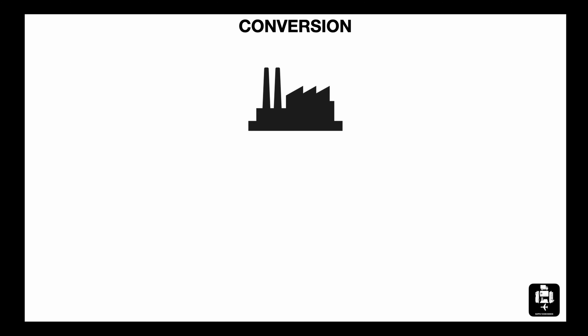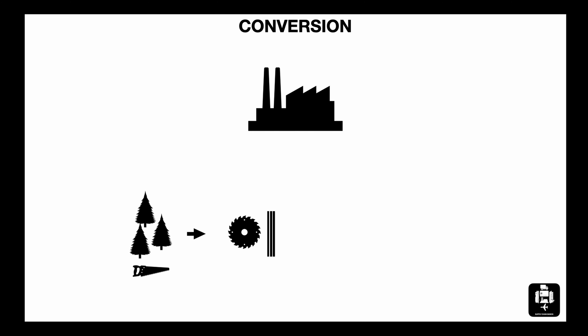Conversion. Conversion is the process of converting inputs. For example, when making chairs, trees are cut down and sent to the sawmill to be converted into planks. The planks are then sent to a factory, where they are converted into chairs.